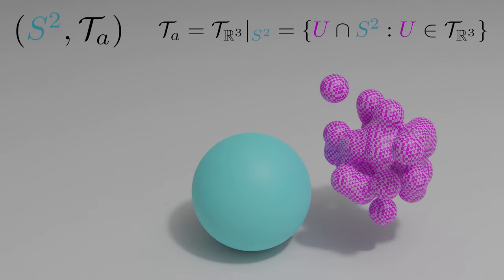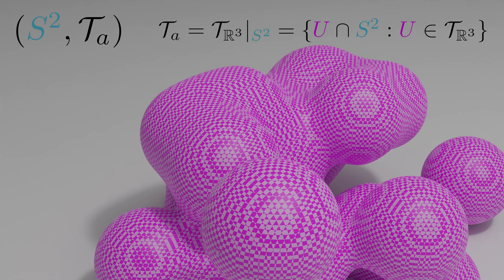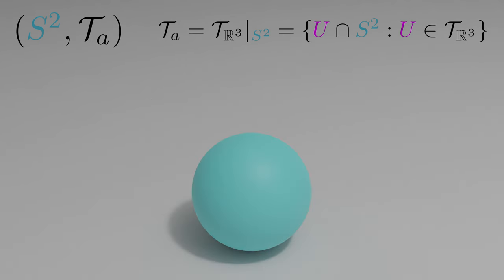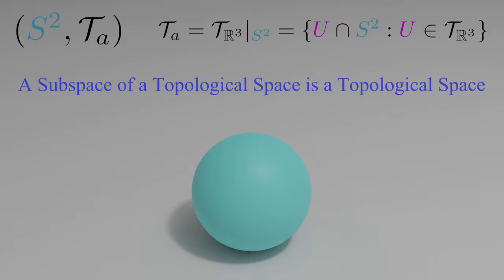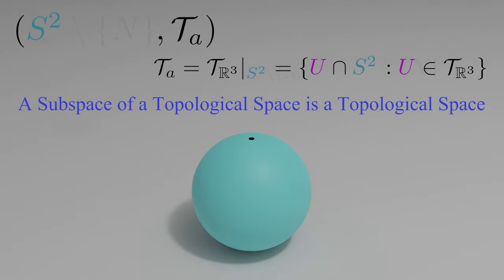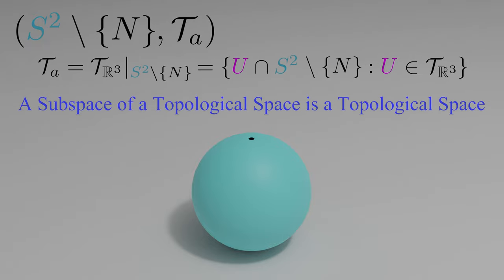When the blob and sphere don't intersect, we get the empty set, so the empty set is in this topology. When a blob fully engulfs the sphere, this means that S2 itself is in the topology, thus the first axiom is satisfied. And defining our topology on the sphere this way makes it a subspace topology, and any subspace of a topological space is itself a topological space.